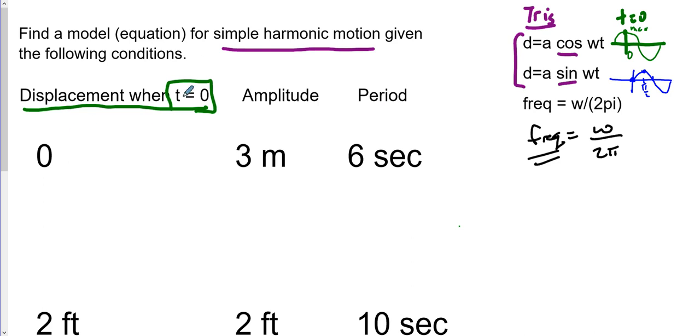When it says the displacement, displacement means where it is at the original point. It says we have a displacement when T equals zero of zero, so we have a point of (0,0). The first step is we're going to determine which type of equation we're going to use. Step one: find the equation or model we're going to use.